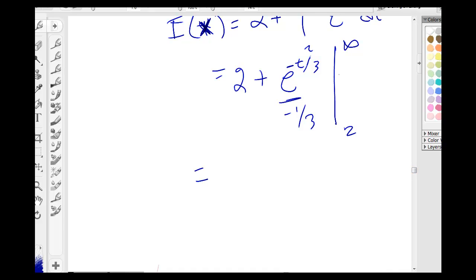And that just equals to 2 plus e to the negative t over 3 divided by negative 1/3, evaluated from 2 to infinity. And this is just going to be 2 plus 3e to the negative 2/3 if you do the necessary calculations for this.